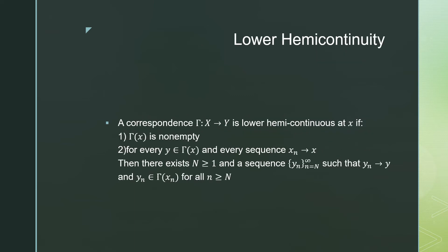For a formal definition of lower hemicontinuity, the correspondence Γ: X → Y is lower hemicontinuous at x if Γ(x) is non-empty and for every y in our constraint set Γ(x) and every sequence x_n approaches x, there exists some index n̄ greater than zero and a sequence y_n where n goes from this index n̄ to infinity such that y_n goes to y.